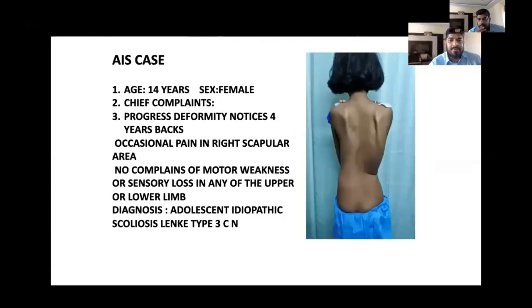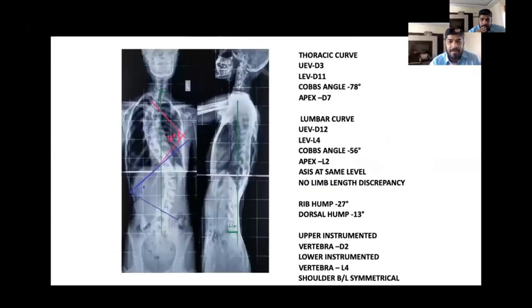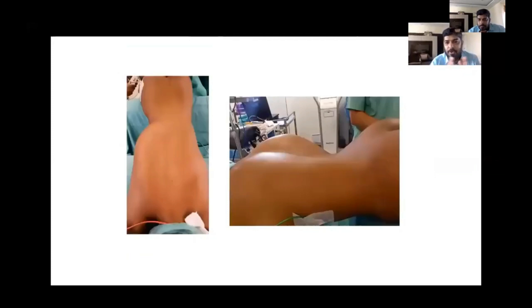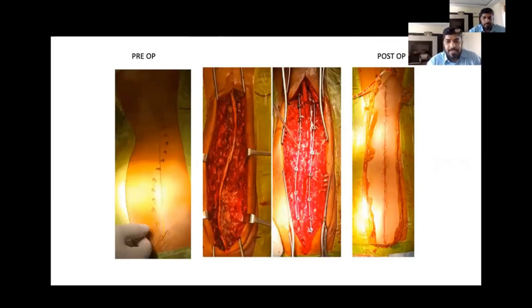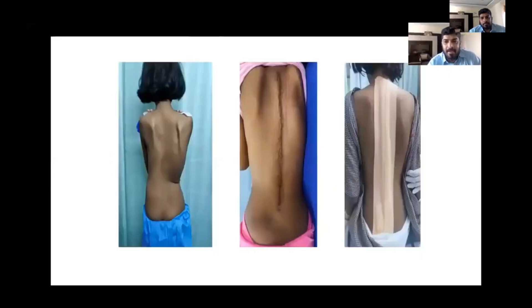Just a case: double major curve, type 3C Lenke, with a thoracic curve of 78 degrees and 56 degrees lumbar curve. If you plan it well, there are very good chances you can place screws in the apical vertebrae well. At times it can be very scary, but when you do a good release, you can put very good screws. You can use a freehand technique and if need be, check with C-arm in case you are in doubt.